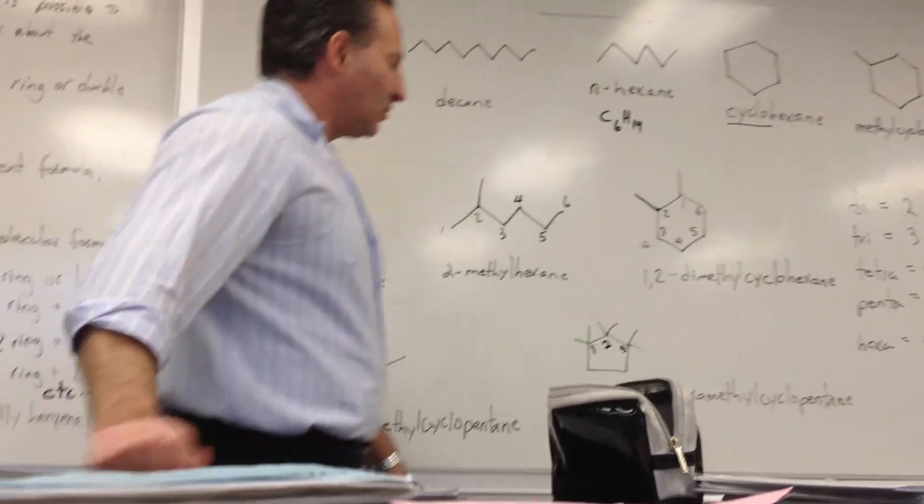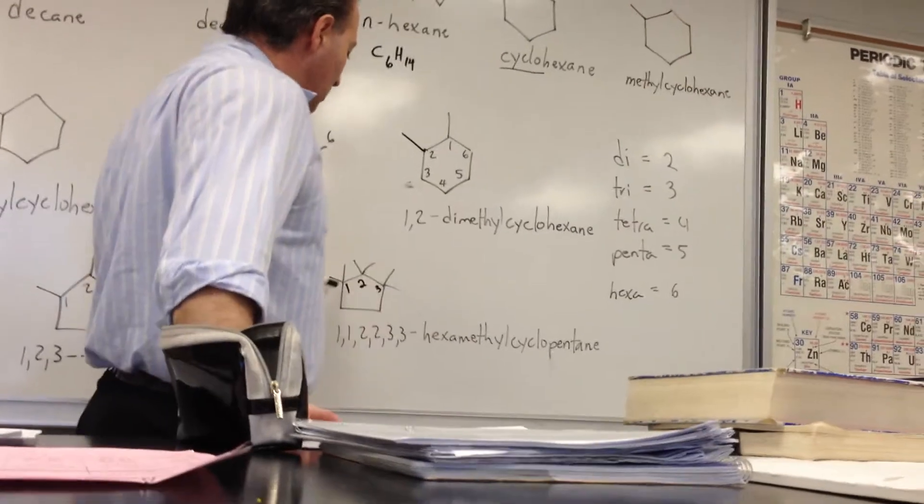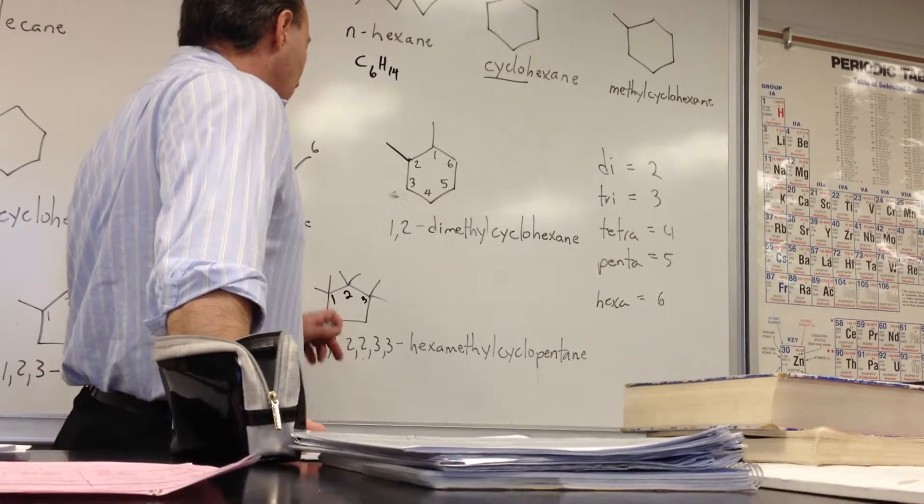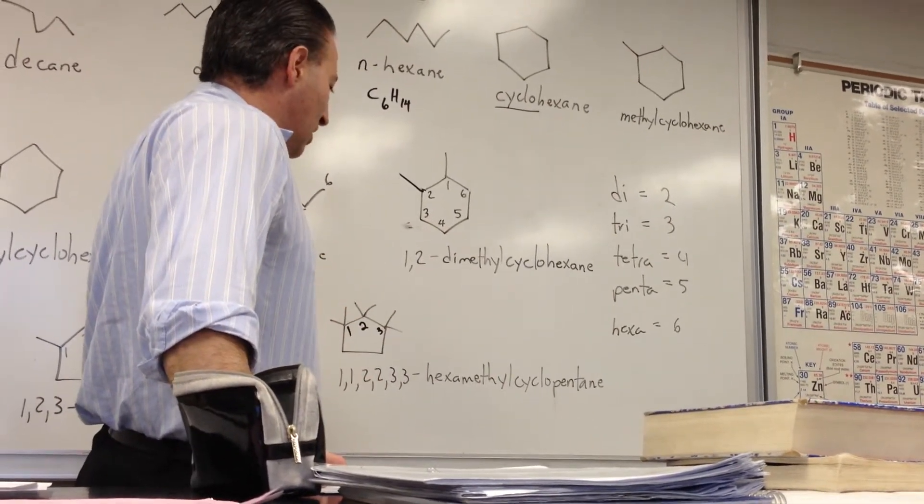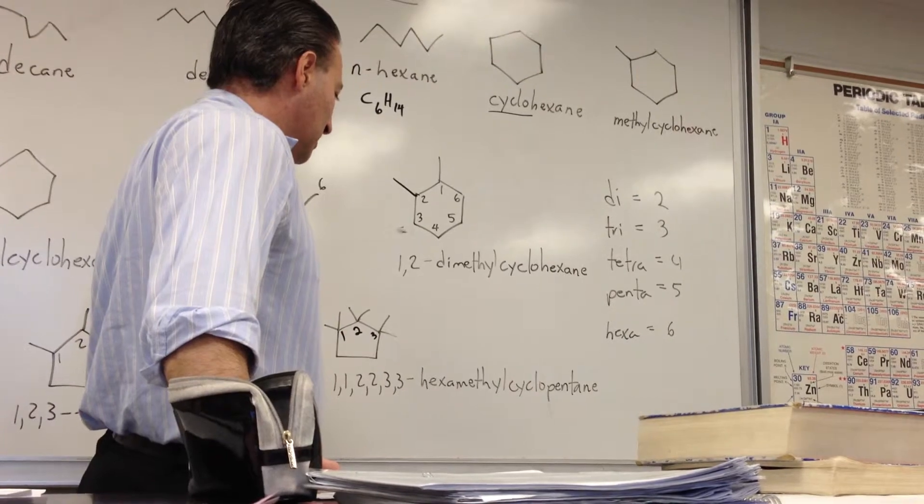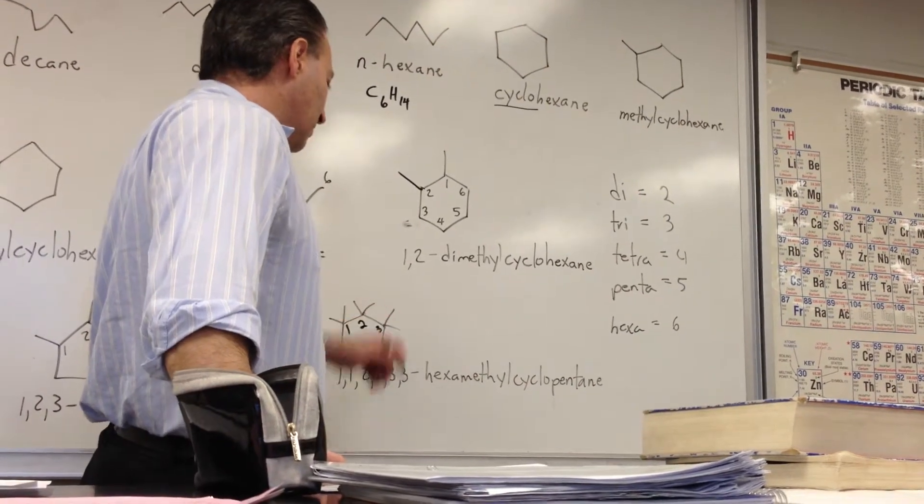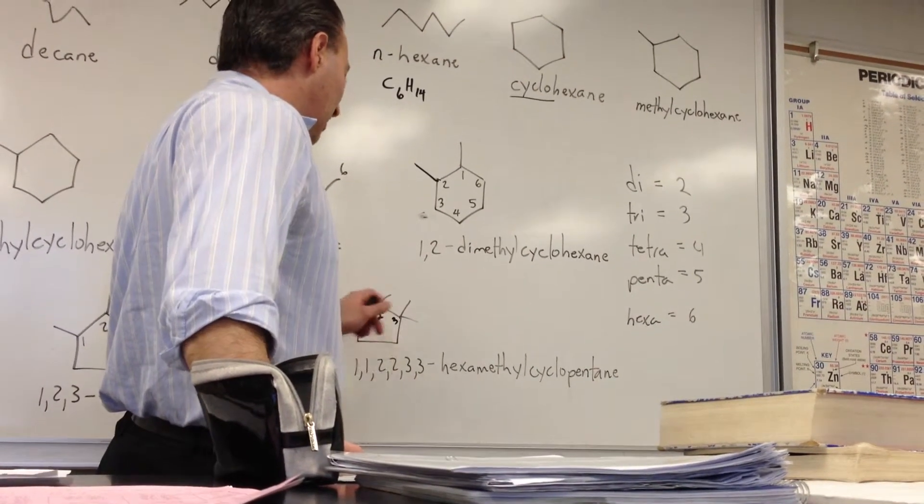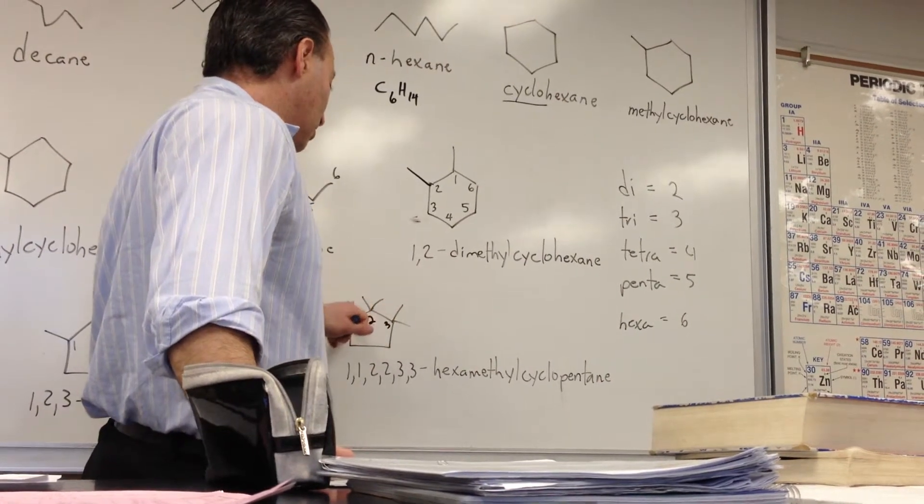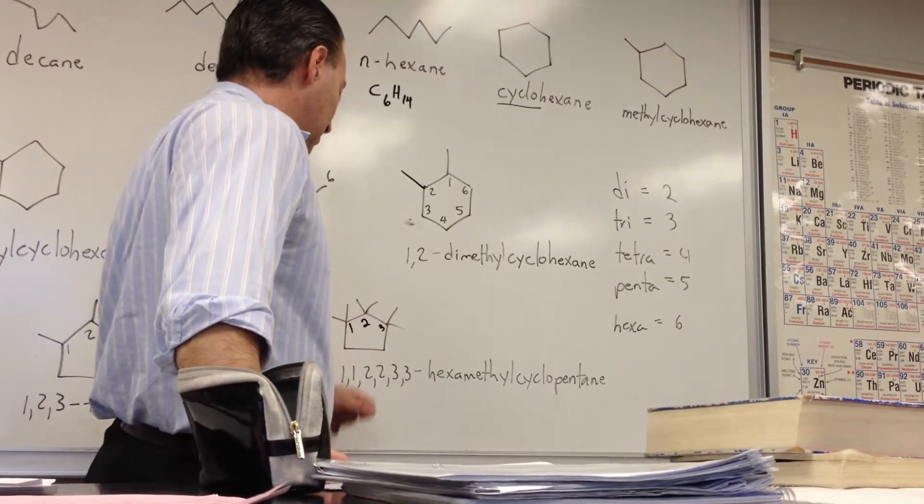And the last example, we have 6 identical substituents, all methyl groups. The numbering is such that you try to get the lowest possible numbering to all the substituents. They're all equal so we can write them all from left to right.